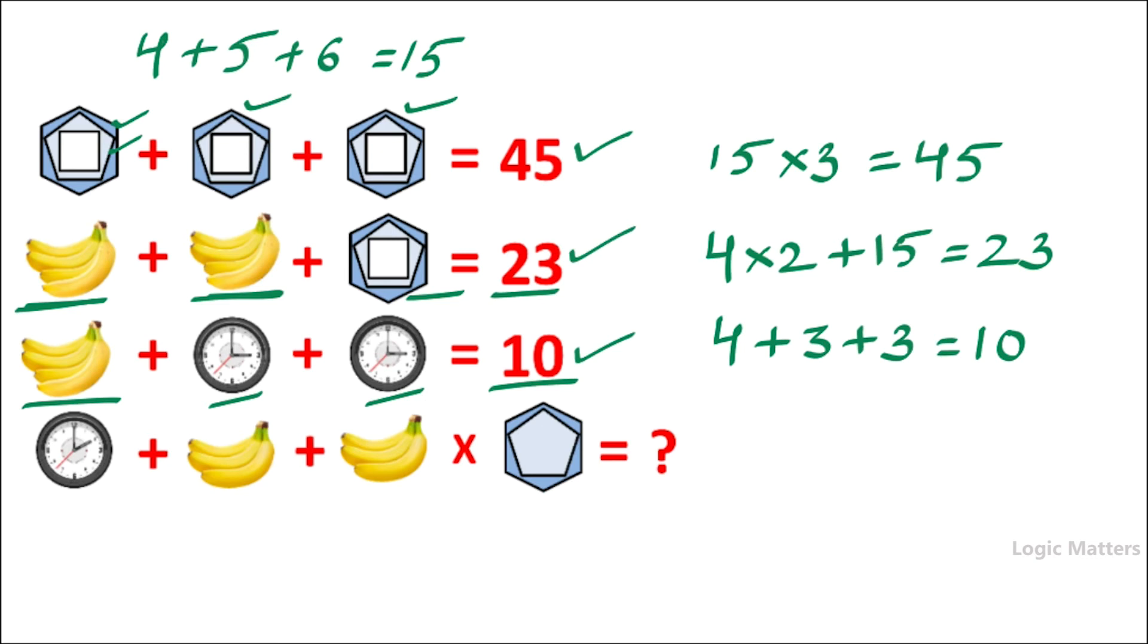Likewise, we need to identify the value of this. In order to do that, we have the time as two here, so let's take two, and we have three bananas that need to be added, so plus three, and then plus again with three bananas.